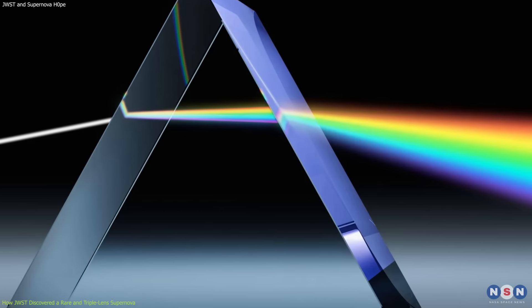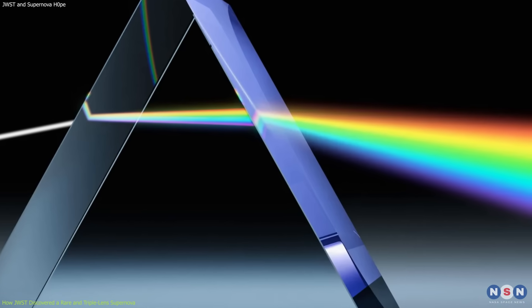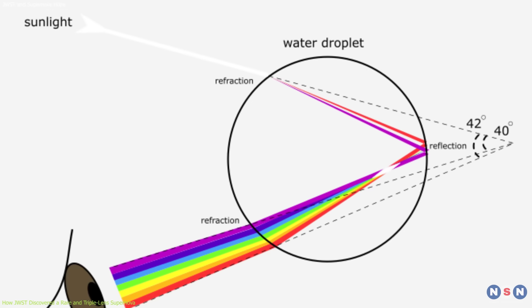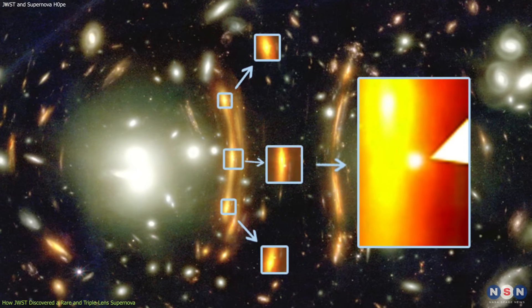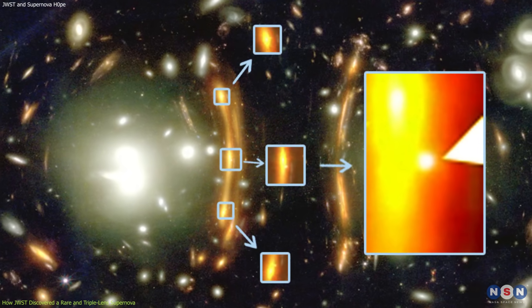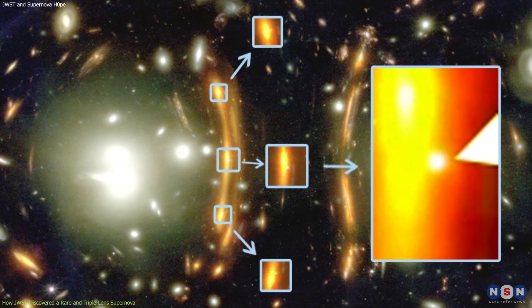This is similar to how a glass prism splits white light into different colors or how a water droplet creates rainbows. The result was that James Webb saw three images of the same supernova at different positions and magnifications in its field of view.